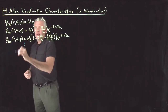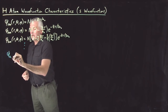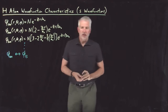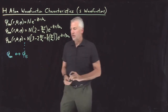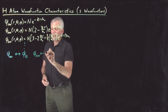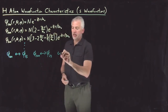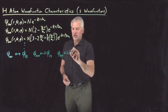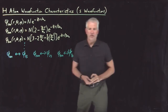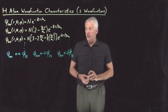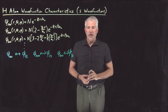So the 1,0,0 wave function we sometimes call the 1s wave function. Likewise, the 2,0,0 wave function is a 2s wave function, and 3,0,0 corresponds to the 3s wave function. Those are the same 1s, 2s, 3s orbitals that you're familiar with from thinking about hydrogen atoms at earlier levels of chemistry courses.